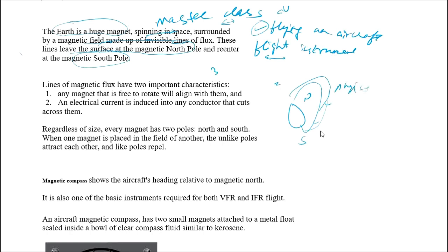There are two important characteristics of these lines of magnetic flux. First, whenever a small magnet is placed in the line of flux, it will rotate and align with those lines of force — any magnet that is free to rotate will align with them. Second, an electric current is induced into any conductor that cuts across these lines of magnetic flux.